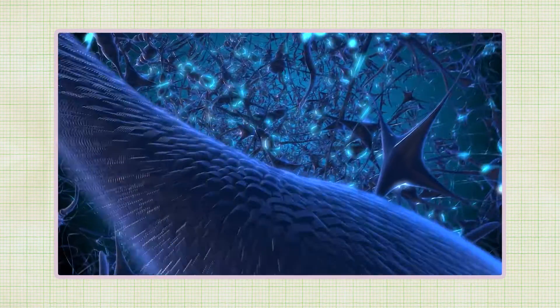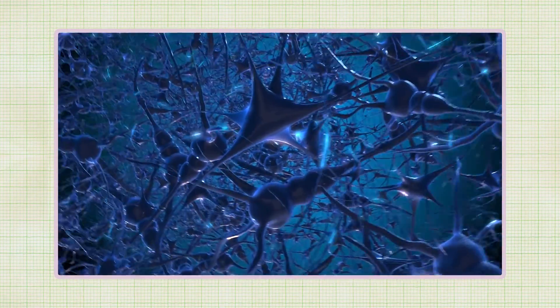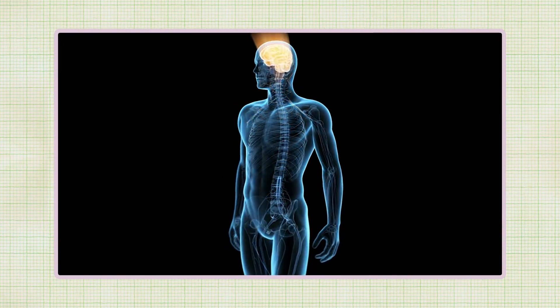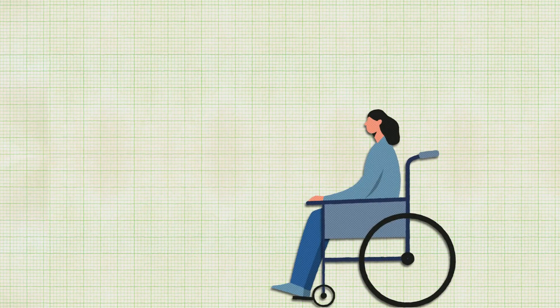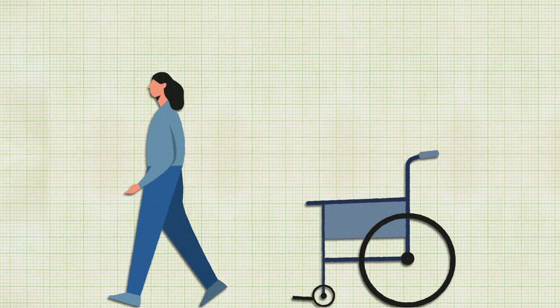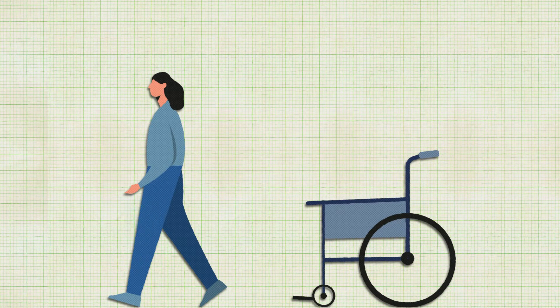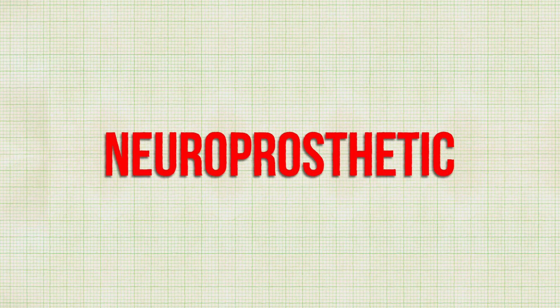Because neurons, like computers, send information with electrical signals, it's possible to bypass the standard user interface and connect directly to the nervous system. Beginning in the 1960s, scientists began successfully helping stroke victims walk with a portable device that delivered electrical stimulation to a nerve in the leg. This was the first neuroprosthetic.